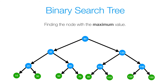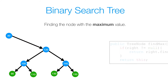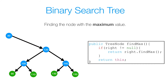Now let's look at the maximum value in a binary search tree. We know that everything larger than a given node is going to be in that node's right subtree, so if we keep approaching to the right, we'll eventually get to the node with maximum value, which in this case is the node with data 150. Our findMax method is very similar to our findMin method, however instead of approaching the left, we approach the right.